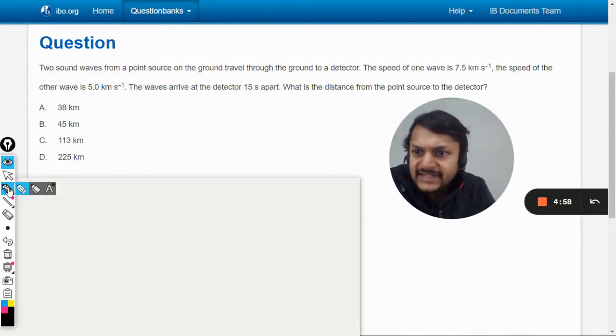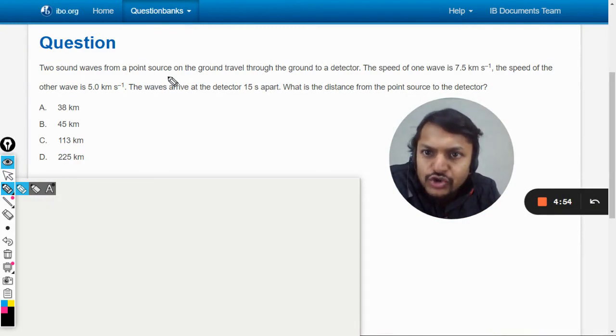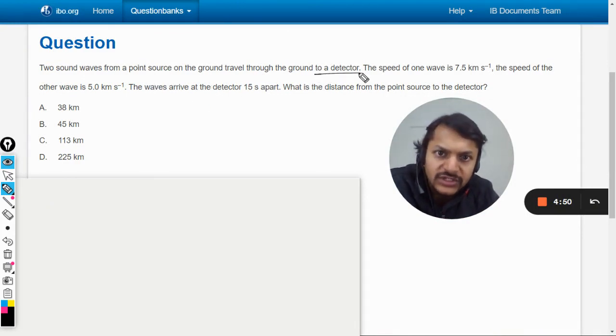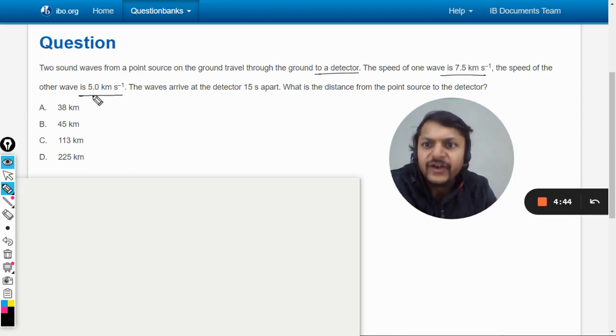Okay dear students, let us see how to do this question. Two sound waves from a point source on the ground travel through the ground to a detector. The speed of one wave is 7.5 km/s, the speed of the other is 5 km/s. The waves arrive at the detector 15 seconds apart. What is the distance from the point source to the detector?